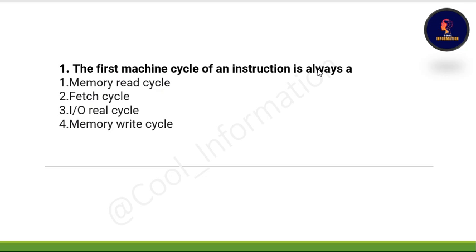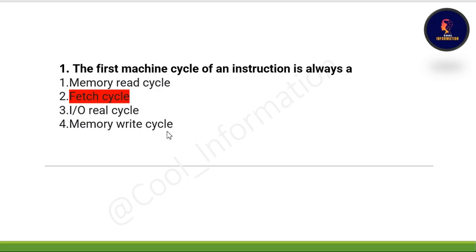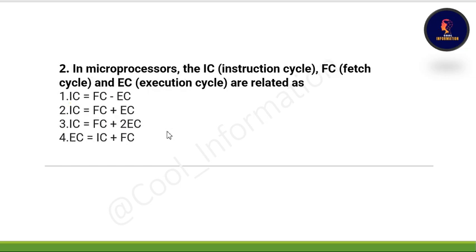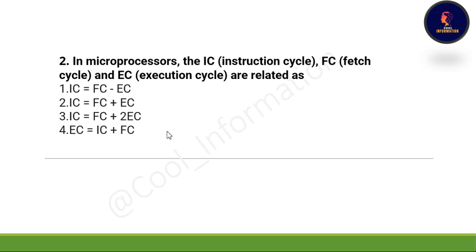Without wasting any time, let's proceed with the first question. The first machine cycle of an instruction is always: option A, memory read cycle; option B, fetch cycle; option C, input/output cycle; option D, memory write cycle. The correct option is option B, which is fetch cycle.